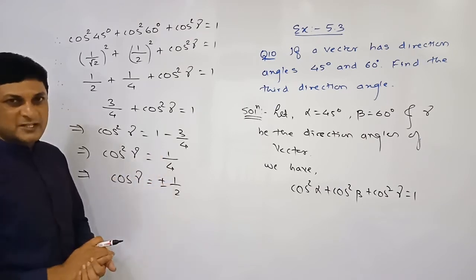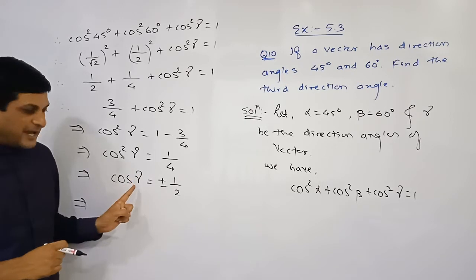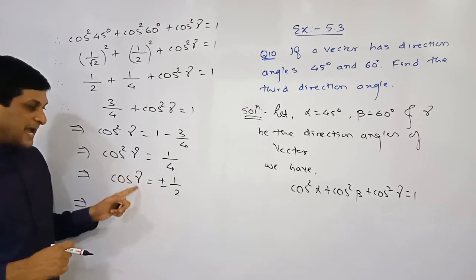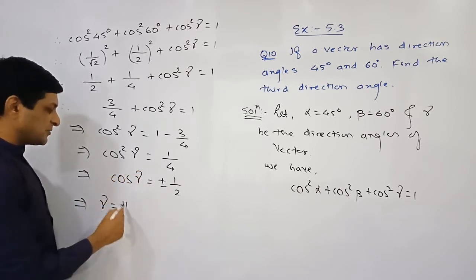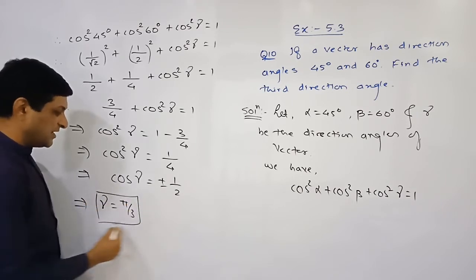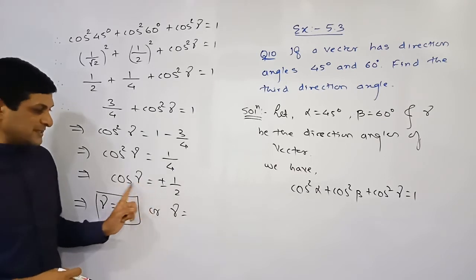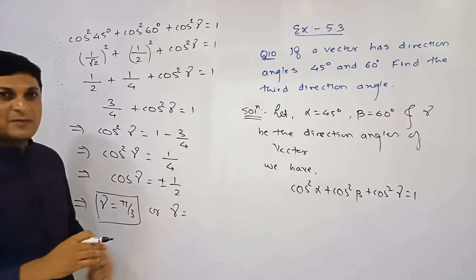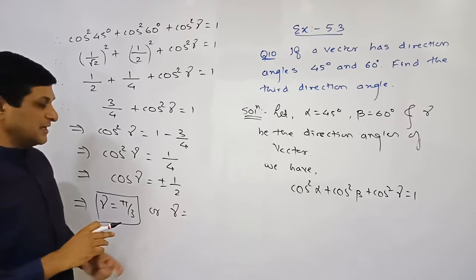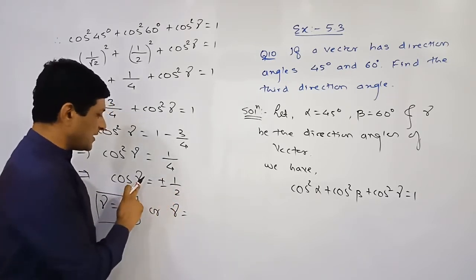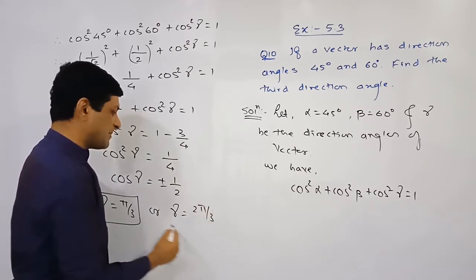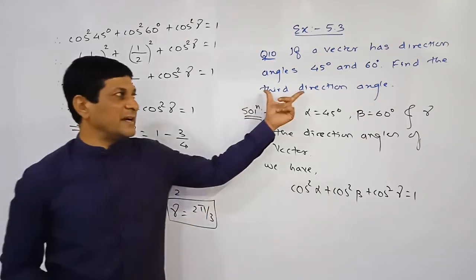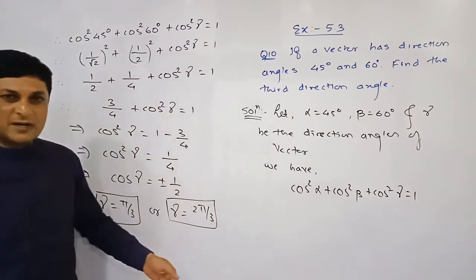If cos γ = +1/2, then γ = 60° (or π/3). If cos γ = −1/2, cosine is negative, and since −1/2 is the value of cos 120°, we get γ = 120° (or 2π/3). So the two possible values of the third direction angle gamma are 60 degrees and 120 degrees.